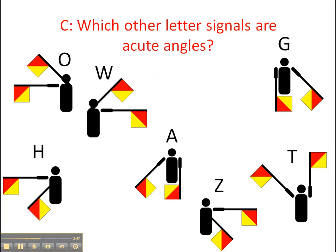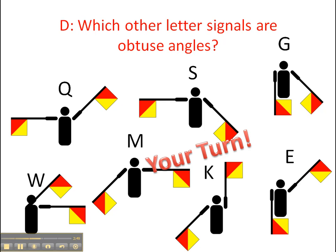Question D: Your turn again. Which other letter signals are obtuse? Now the definition of an obtuse angle is that it's more than 90 degrees. So there's two angles in here that I've thrown in just to throw you off and I want you to figure out which ones they are.